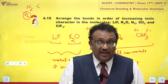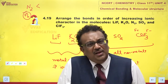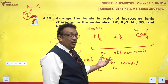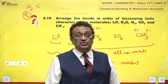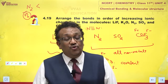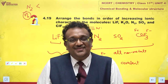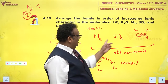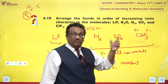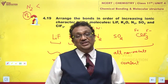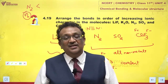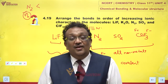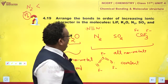What does this ionic character depend on? For predominantly covalent molecules, you are supposed to use the electronegativity difference. Greater the difference, more is the ionic character.